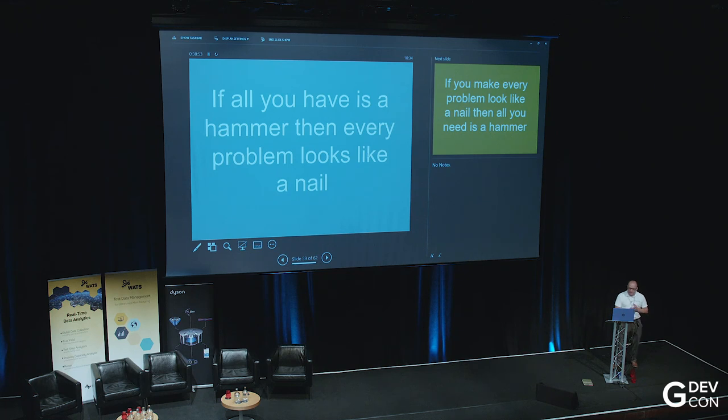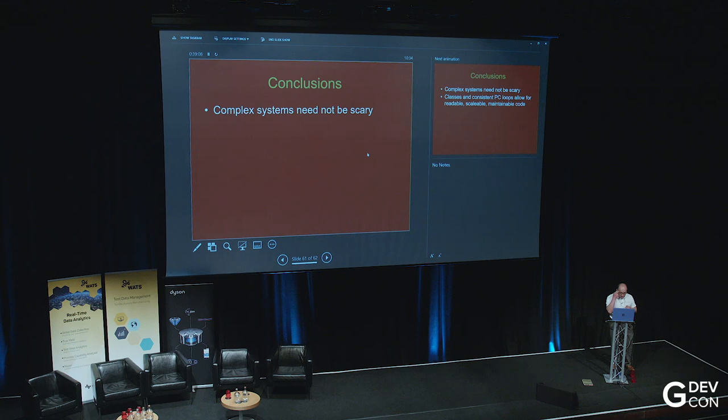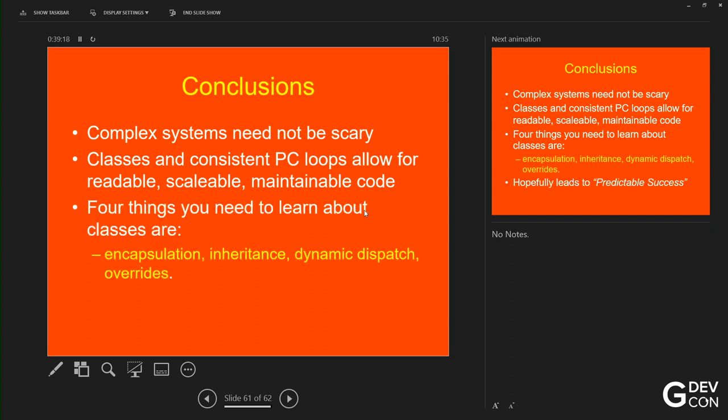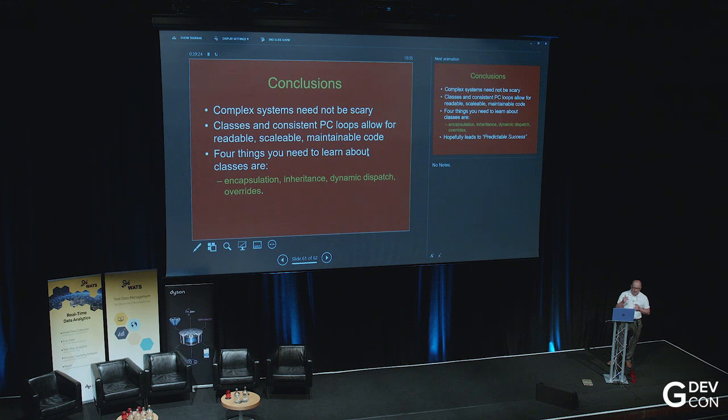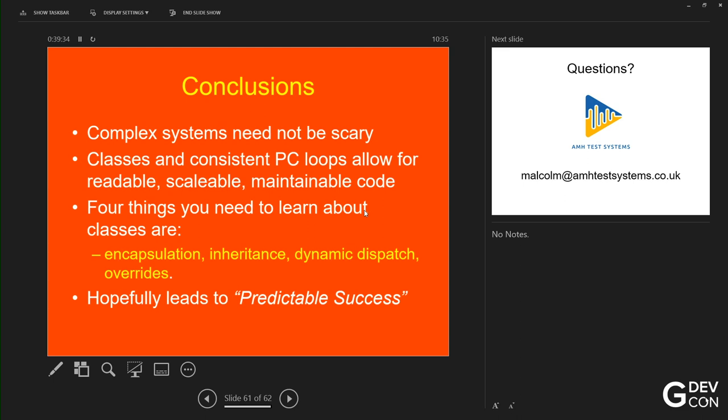So there's a saying, if all you have is a hammer, then every problem looks like a nail. My saying is, if you make every problem look like a nail, then all you need is a hammer. And that's what we're trying to do. We're trying to make this so simple that you're using the same process time and again. So conclusions then. Complex systems don't need to be scary. Classes and consistent producer consumer loops allow for readable, scalable, and maintainable code. There's only four things you need to learn about classes. Encapsulation, inheritance, dynamic dispatch, and overrides. That's it. You don't need to worry about all the smaller intricacies of classes and hopefully that leads to predictable success which is what we were hoping for at the start. That's it. Any questions? That's my email address. If you want the code, email me. I'll happily send you a copy. It won't be absolutely perfect but it's good enough for you to get a feel for things. Are there any questions at all?